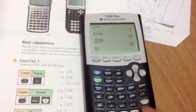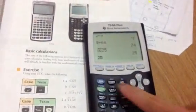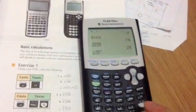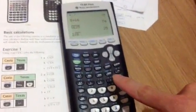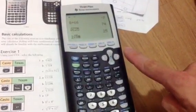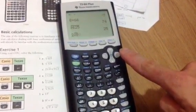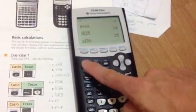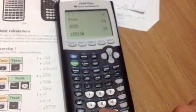So 2, square root, 8. We use the arrow to get out of the square root sign, then multiply times 5, then multiply times square root of 2.